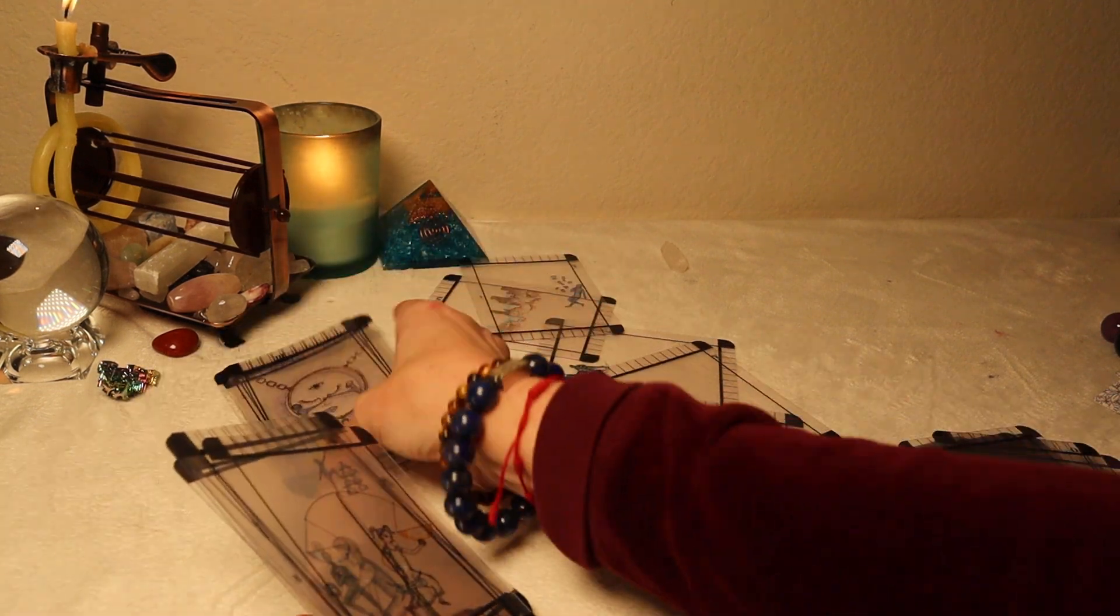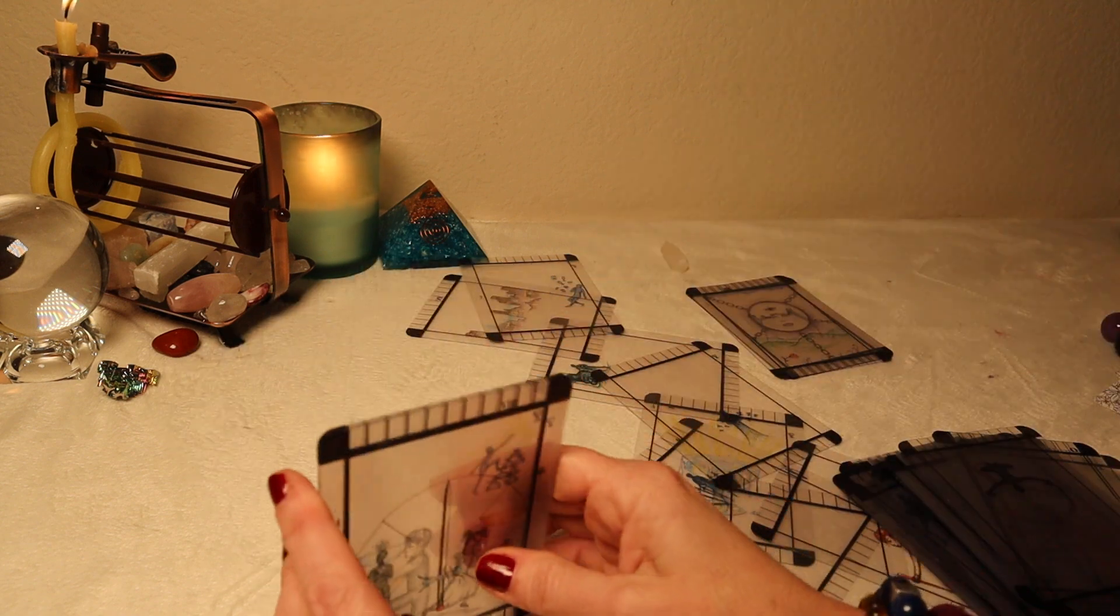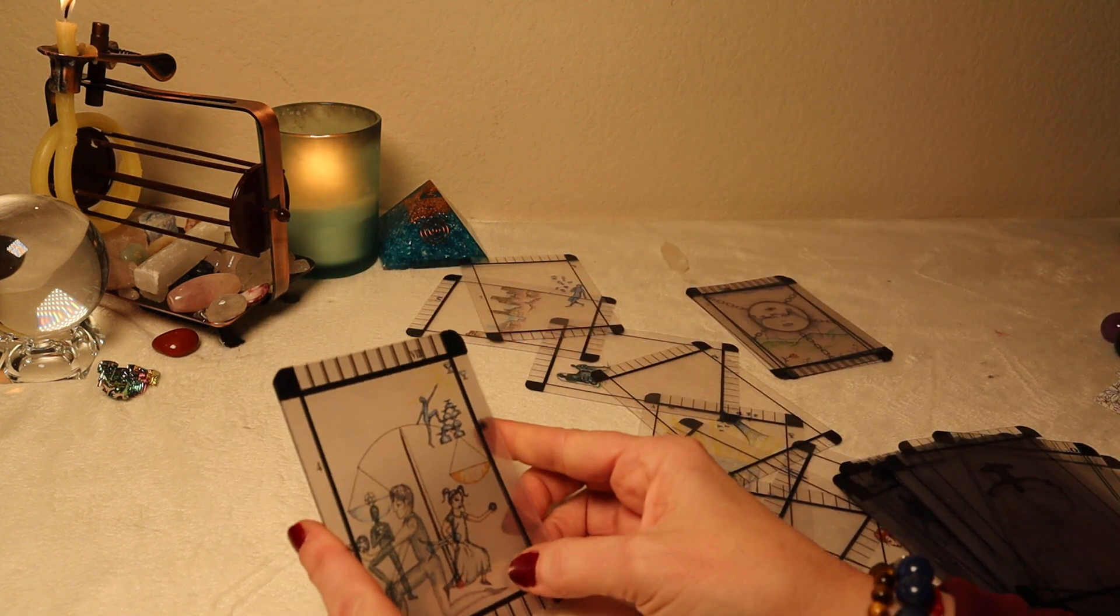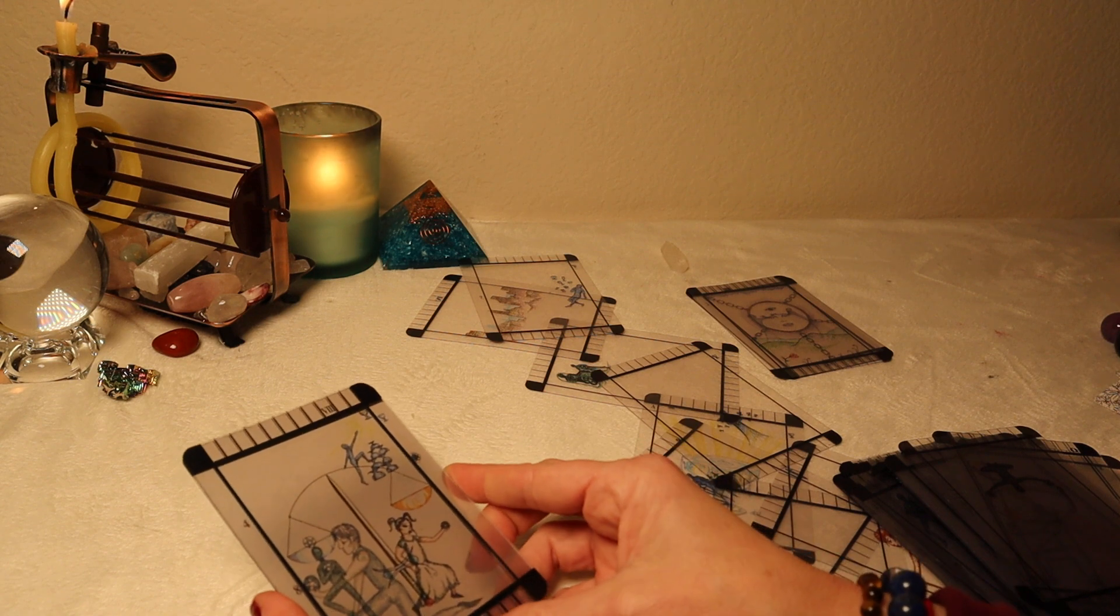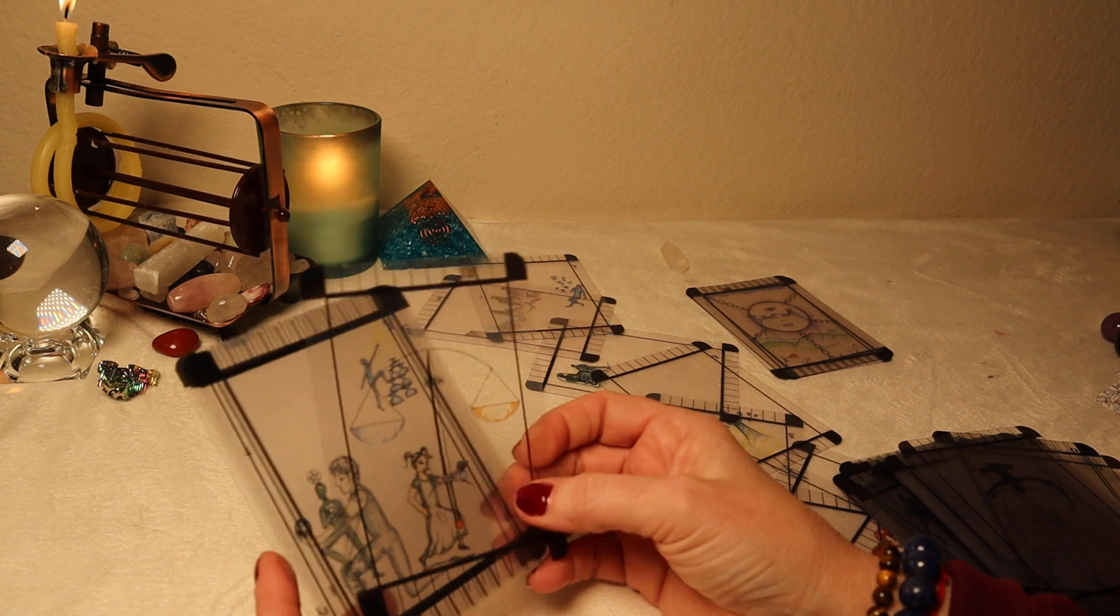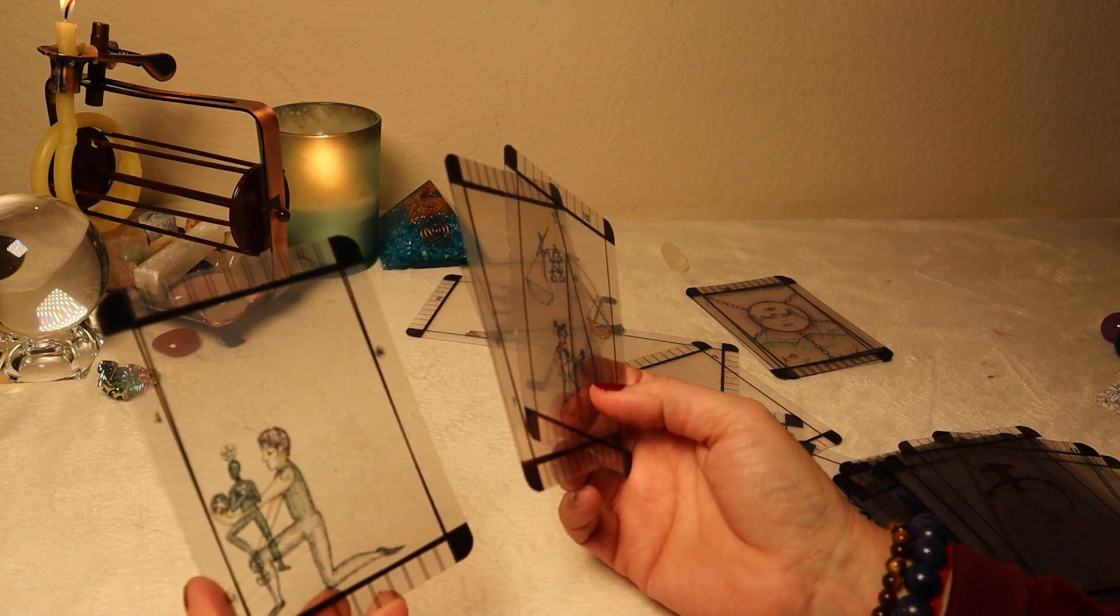When we show up for ourselves, we take care of our bodies, we look presentable, and we walk a certain way and talk a certain way. Once we start showing up for ourselves, other people show up for you. It just comes naturally. You don't have to manipulate it. It just happens. That's key here. You've got union all over the place here.